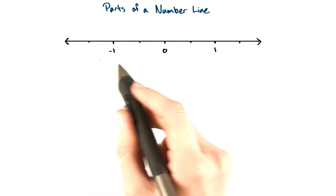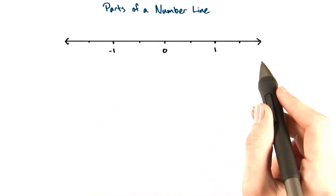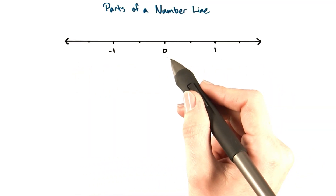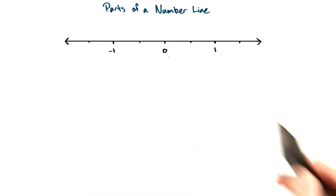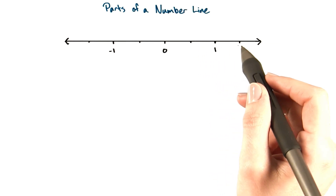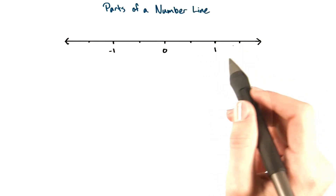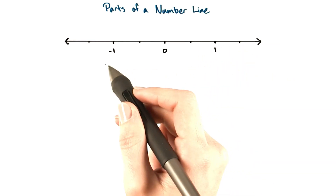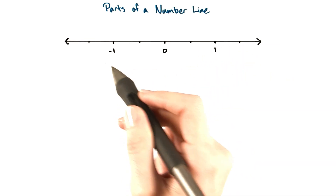Here we have our lovely number line with 0 clearly marked, marks to indicate scale, and a positive and negative direction.